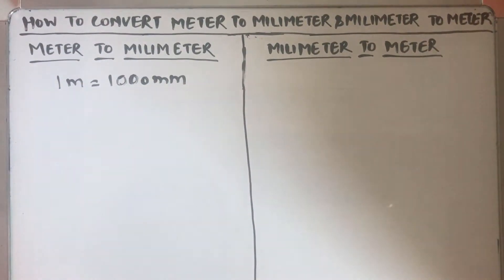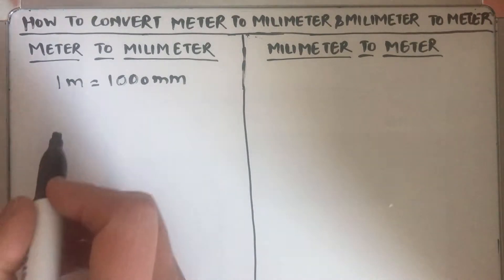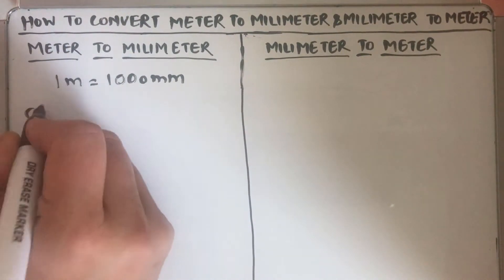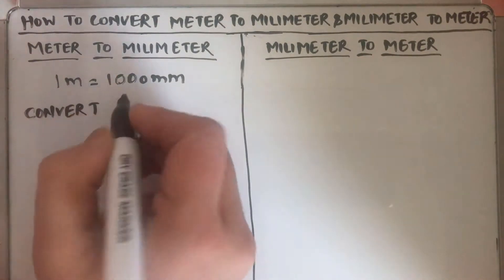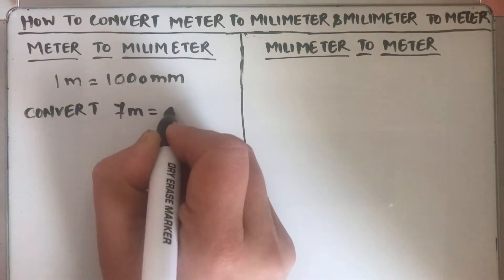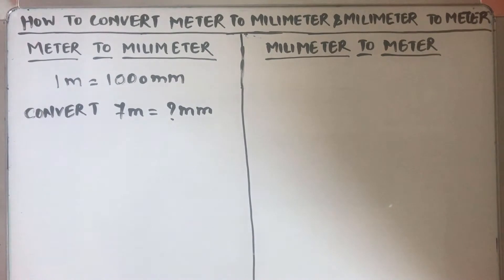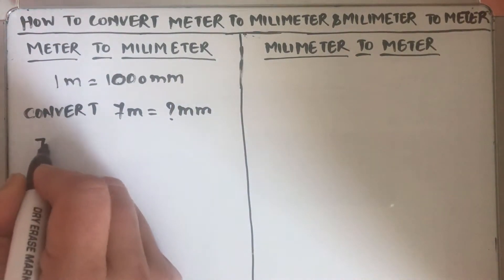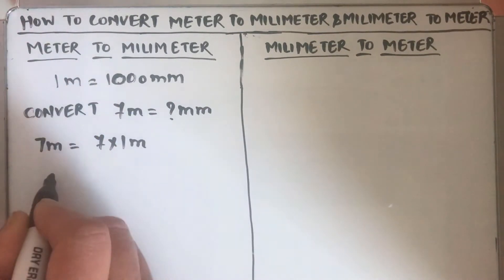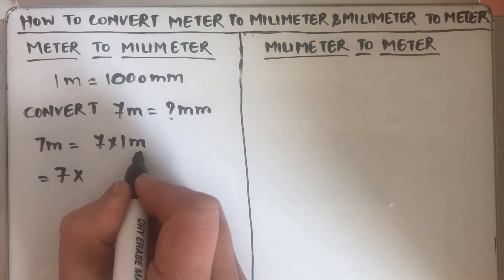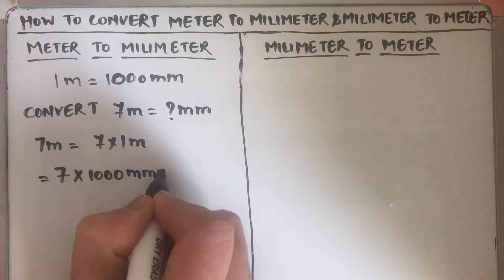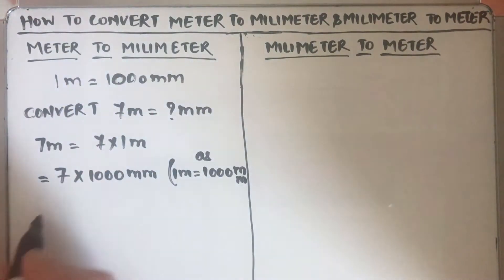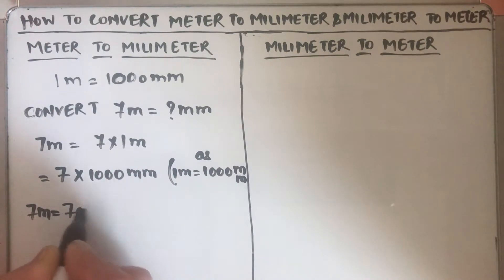This is going to be very easy as you just need to multiply the meter quantity with thousand to convert it into millimeter. So if you have a question to convert seven meters to millimeters, you are going to use this basic relation and write seven meter is equal to seven times one meter, and then in place of one meter we write thousand millimeter, since one meter is equal to thousand millimeter. So seven meters will be equal to seven thousand millimeters.